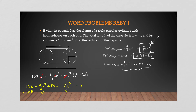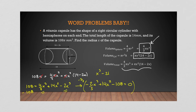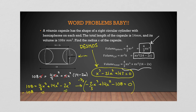Combining the cubed terms: 4/3 − 2 = 4/3 − 6/3 = −2/3. So we have −(2/3)x³ + 14x² − 108 = 0. To eliminate the fraction and the leading negative, multiply everything by −3/2. This gives a cleaner polynomial. Since the roots here are not all rational, we'll plug this into Desmos and look for x-intercepts, which are our roots.